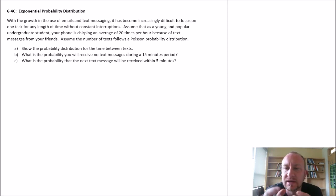This one is starting to touch on the relationship more specifically between the Poisson probability distribution and the exponential probability distribution. We're looking at the growth of emails and text messaging. It's so difficult to focus on anything. When I'm making my videos, I've got my phone with the ringer turned off because otherwise there's emails, phone calls, text messages. I'm exaggerating—I'm not that popular—but it can happen. You get interrupted all the time with these things. So as a young and popular undergraduate student, your phone is chirping an average of 20 times per hour because of messages from your friends.